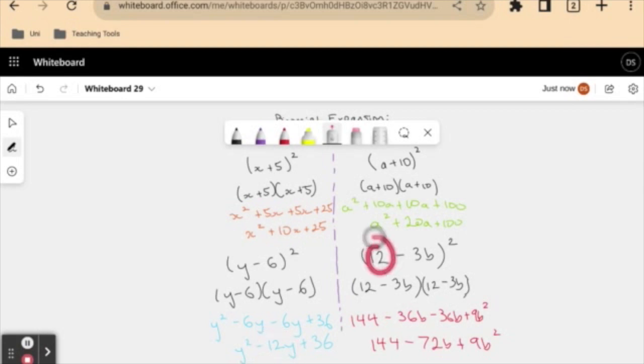Same here. This term squared. Negative 3b, we got a square term. And we got two lots of the product of our two elements in our binomial, which were negative 36b. And two lots of that gave me negative 72b.